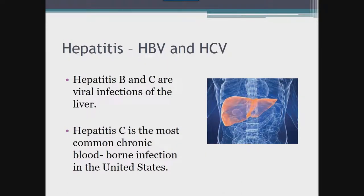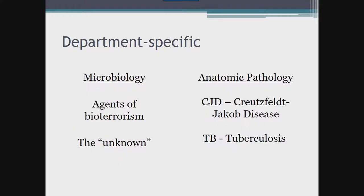Hepatitis B and C are both viral infections of the liver, with hepatitis C being the most common chronic bloodborne infection in the United States. Exposure in the laboratory can occur during processing and specimen handling tasks. While most clinical departments receive mainly blood and some body fluid specimens, anatomic pathology and microbiology receive a whole other array. Microbiology deals with blood, body fluids, tissue samples, and may encounter unknown agents that could be agents of bioterrorism. Anatomic pathology deals with fresh tissue, and agents of particular concern for histotechnologists and cytology prep personnel include Creutzfeldt-Jakob disease (CJD) and tuberculosis.